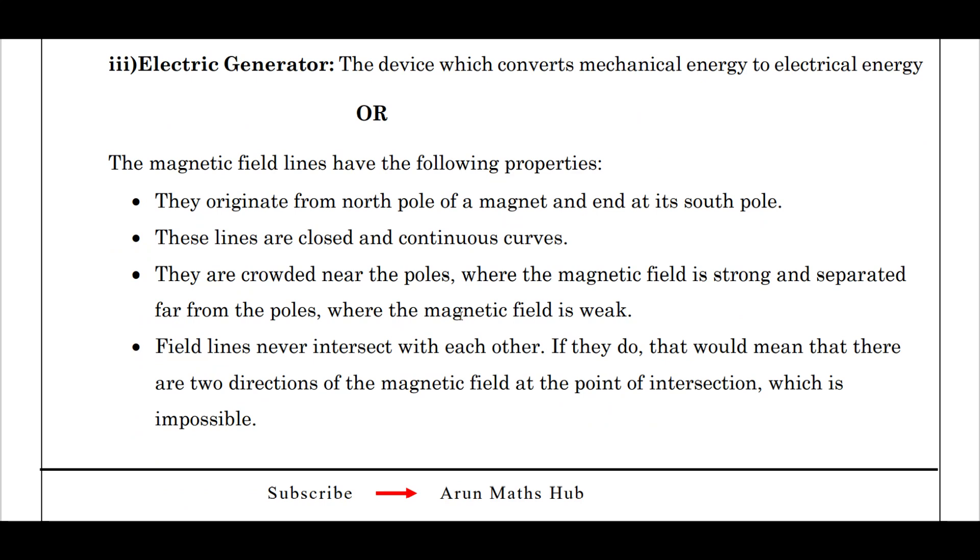Next question: the properties of magnetic field lines. Magnetic field lines originate from north pole of a magnet and end at its south pole. These lines are closed and continuous curves. They are crowded near the poles where the magnetic field is strong and separated from the poles where the magnetic field is weak. Magnetic field lines will never intersect.